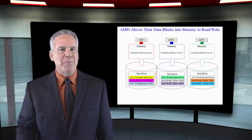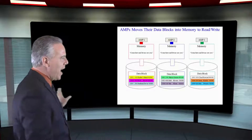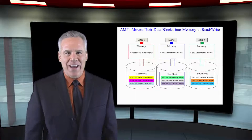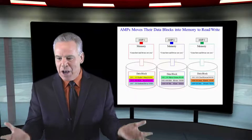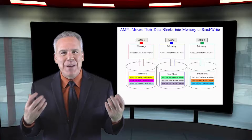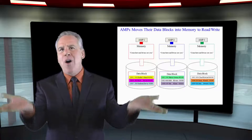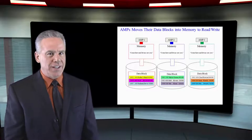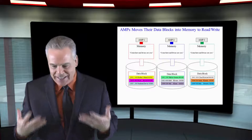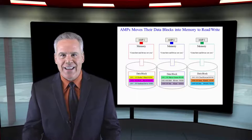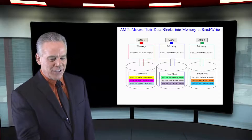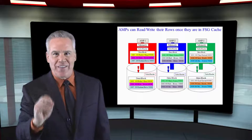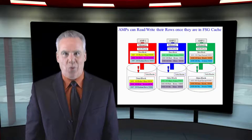Let's make this point perfectly clear. We've got our data rows down there, ready to be read, but the AMPs are all saying come into my memory so I can see you. Once it gets there it looks great, but until it gets there they can see nothing on that disk. It's all about block movement.